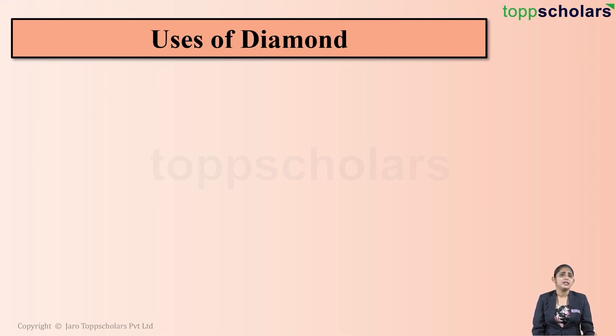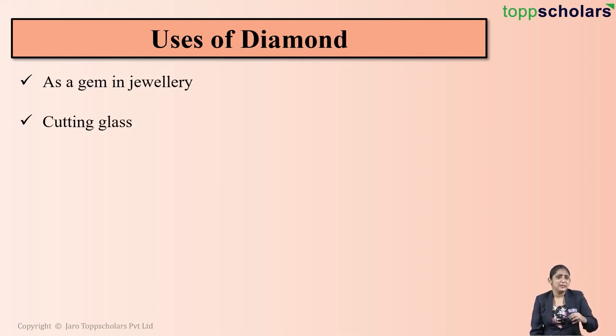Let's discuss where is diamond used. We all know that diamond shines very brilliantly. Because of this brilliant shine of the diamond, it is used as a gem in jewelry. Also, since it is the hardest natural substance, it is used for cutting glass. Also, it is used for drilling the marble stones and drawing wires.